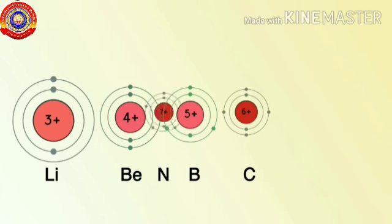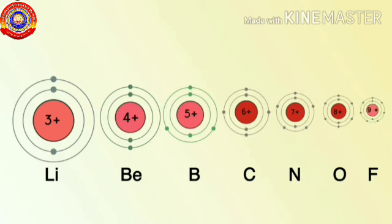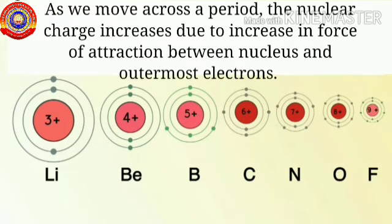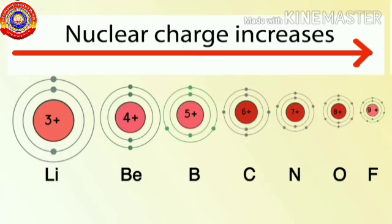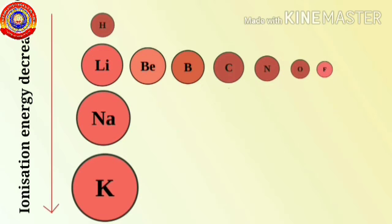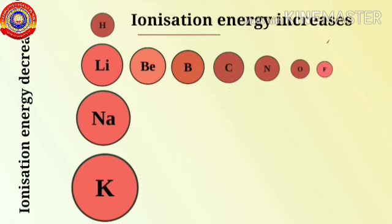Now let's learn how ionization energy varies in a period. We saw that atom size decreases as we move from left to right in the periodic table, because of the increase in nuclear charge. As a result, the force of attraction between the nucleus and the outermost electron increases, and so the ionization energy also increases. The atom having a high nuclear charge shows the highest ionization energy. Here, fluorine is the element which shows the highest ionization energy. So the ionization energy decreases as we move from top to bottom, and increases along a period.